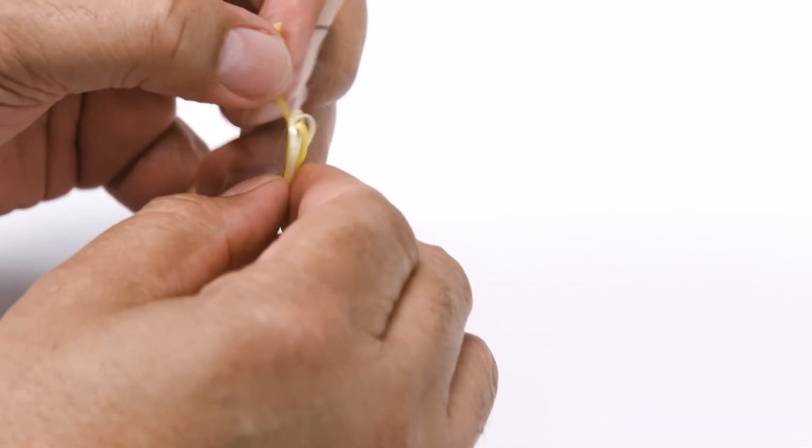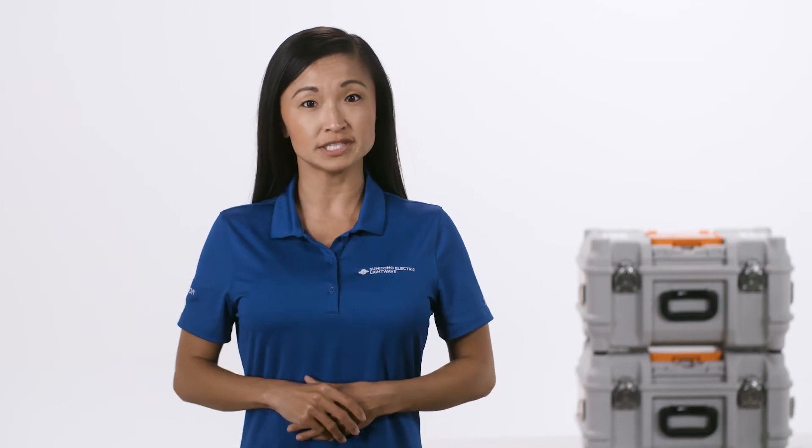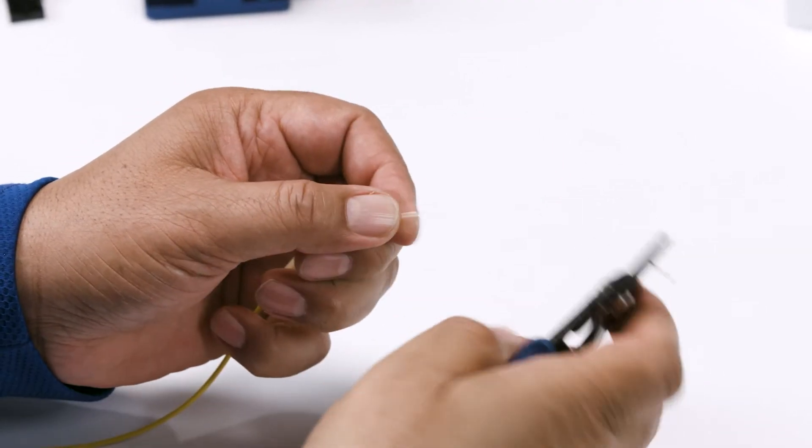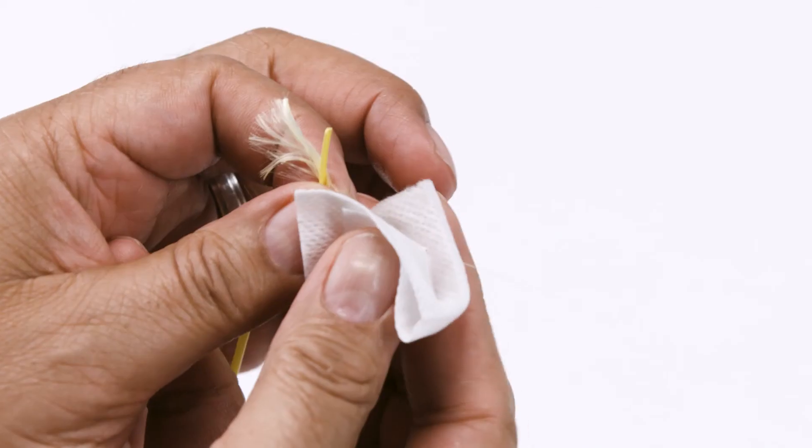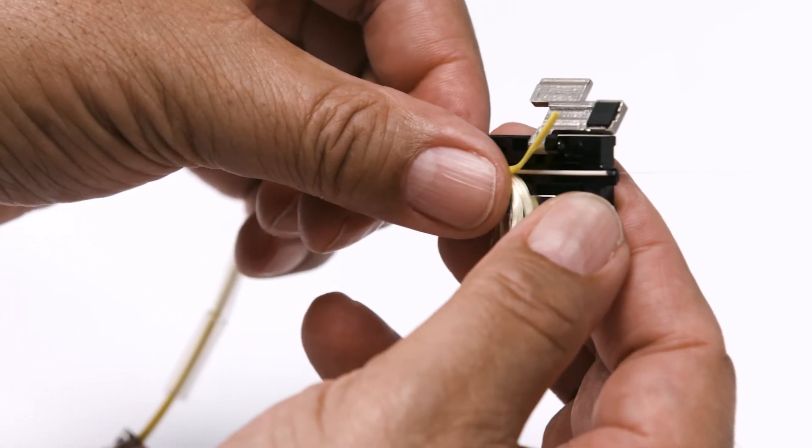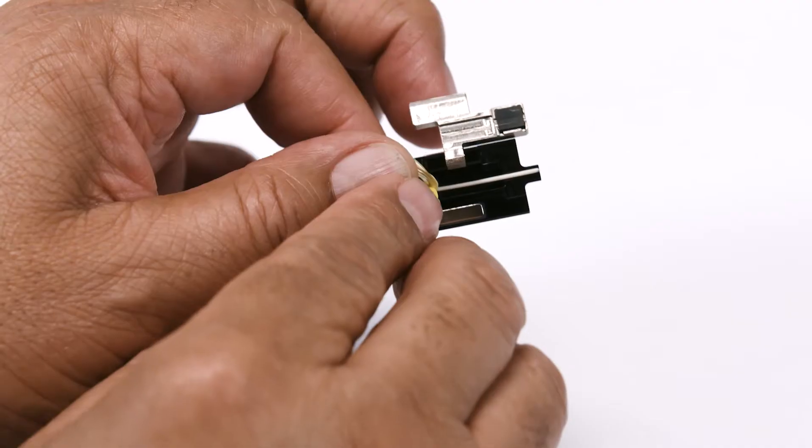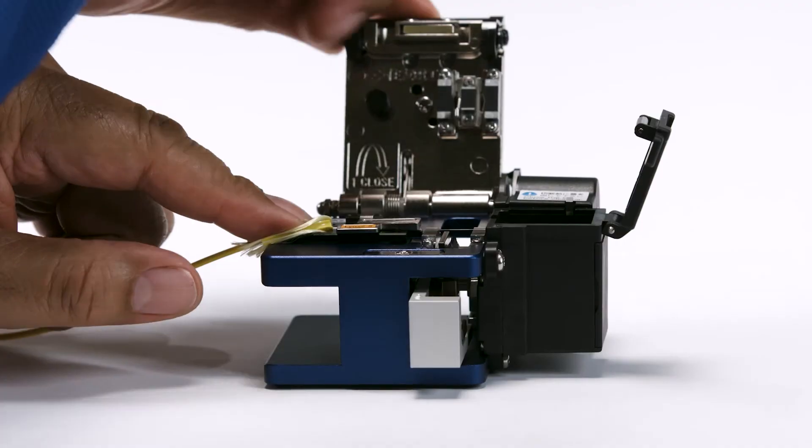Now let's prepare the fiber. Fiber preparation includes 4 orderly steps. Stripping the fiber, cleaning the stripped fiber, placing the fiber into a holder, and then cleaving the fiber.